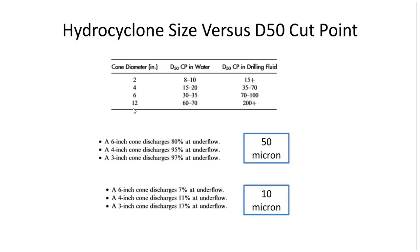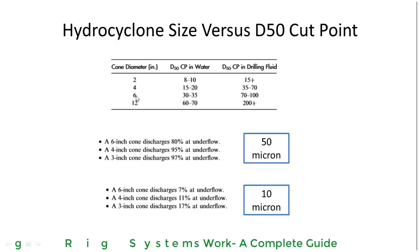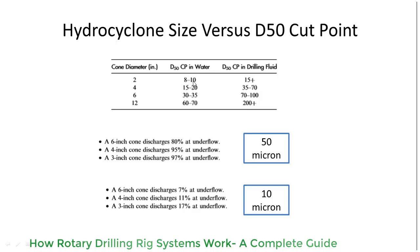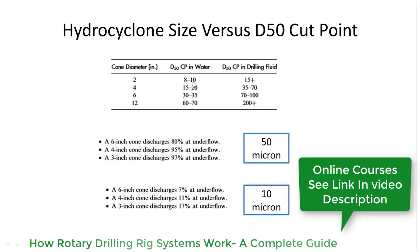Hydrocyclone size versus D50 cut point — here we can see cone diameters of the hydrocyclone: 2 inch, 4 inch, 6 inch, and 12 inch. The D50 cut point means 50% of the solid particle micron size will pass from the underflow and 50% from the overflow of the hydrocyclone cone.